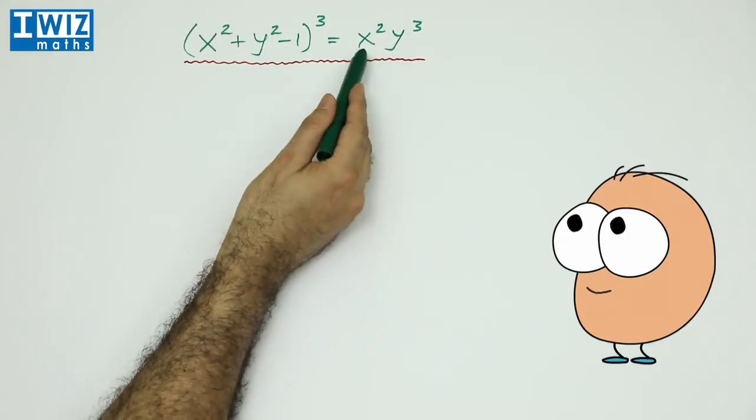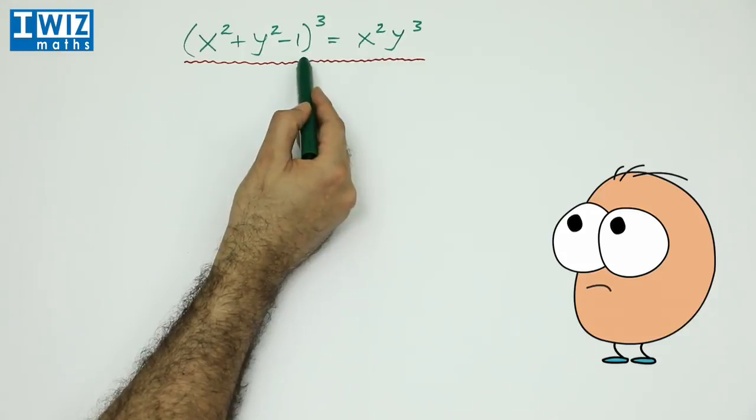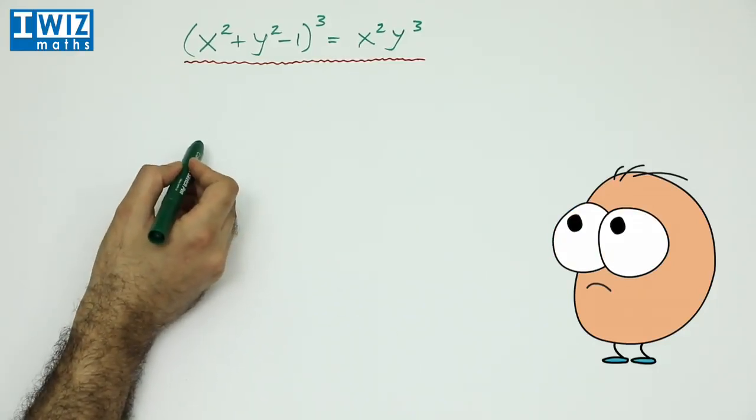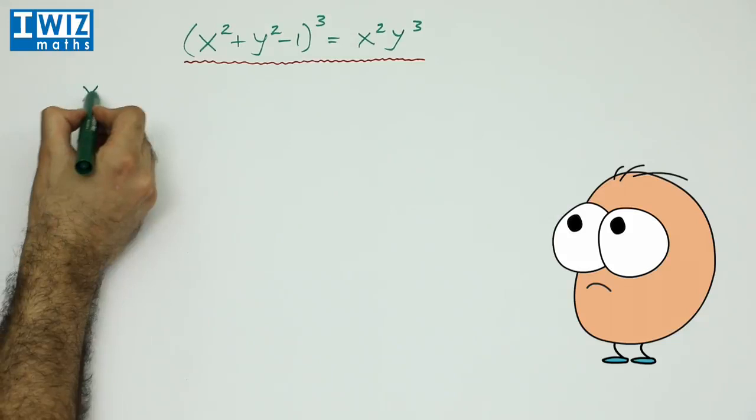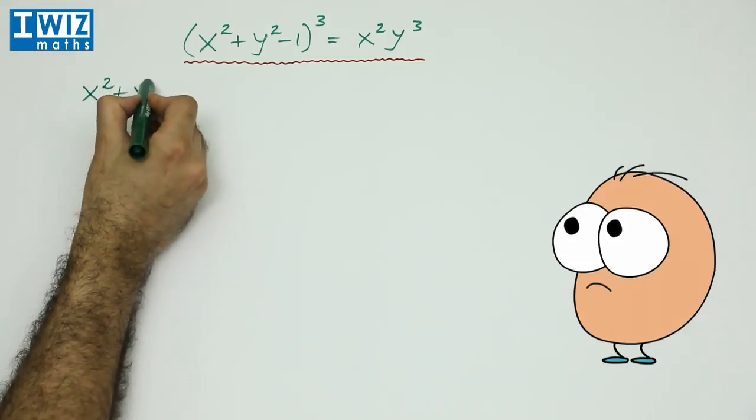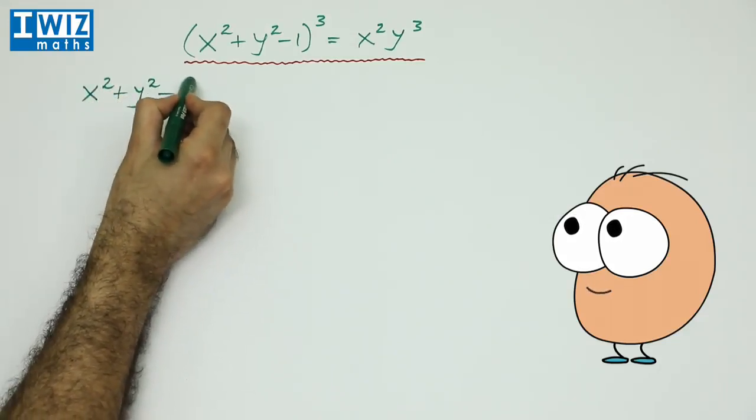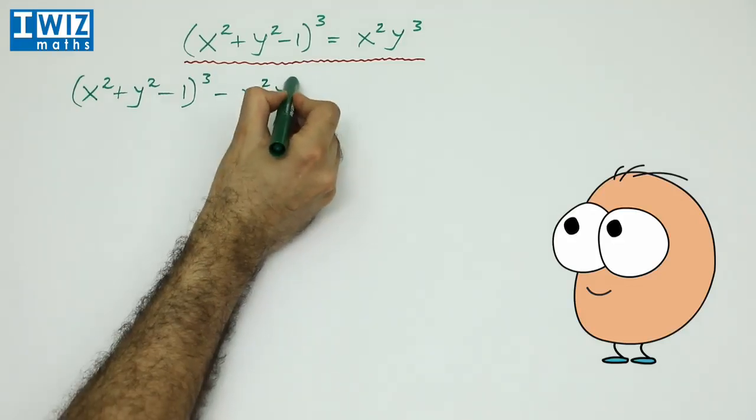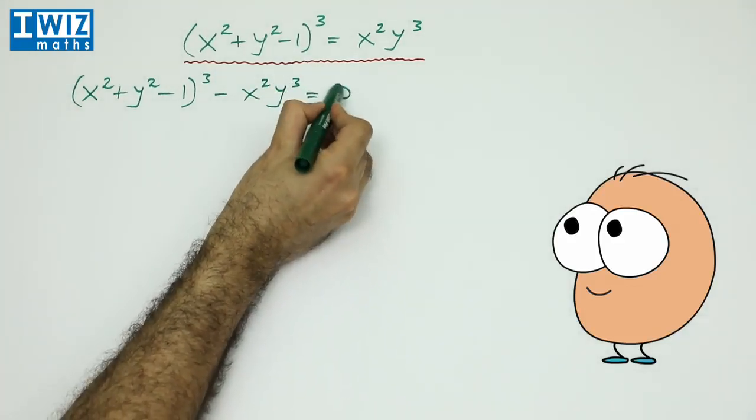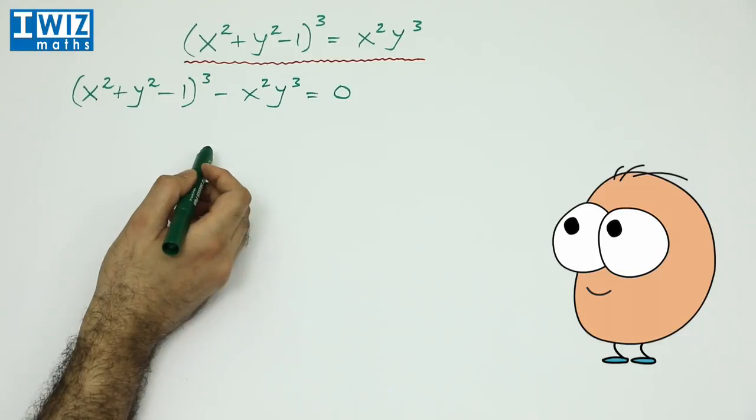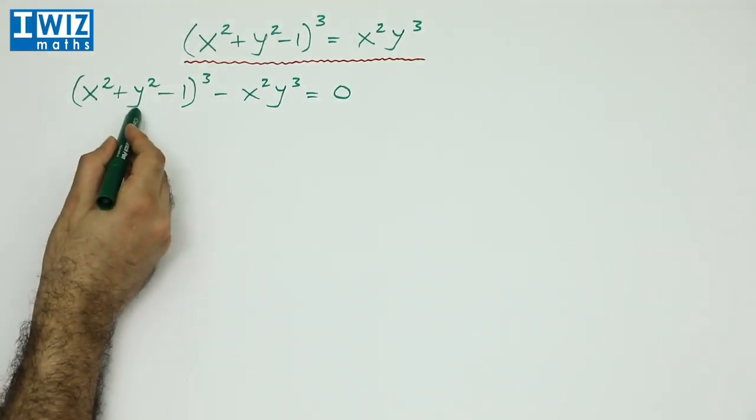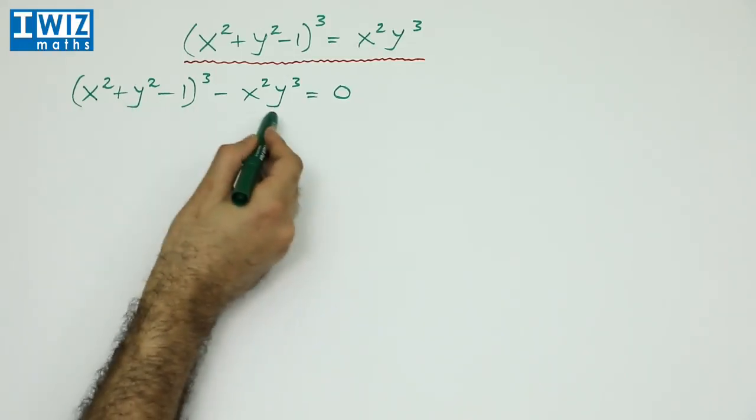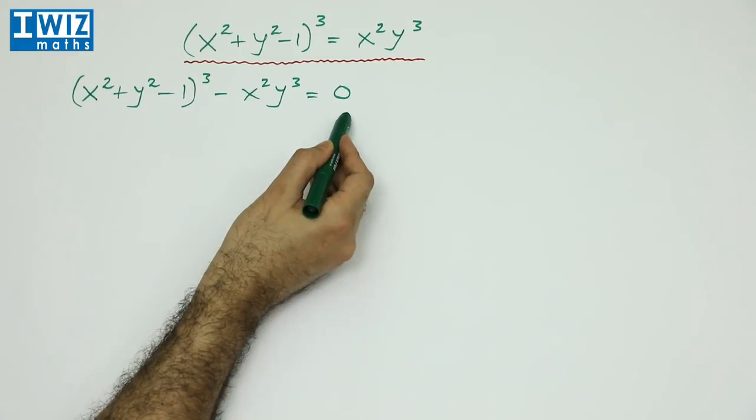So the first thing we can do is take this expression here and put it on the left hand side. It doesn't really make much of a difference but it gives us something to do. So we have x square plus y square minus one whole cube minus x square y cube is equal to zero. Now, essentially what we are after are values of x and y such that when we plug in the values of x and y into this expression here, the right hand side equals to zero.